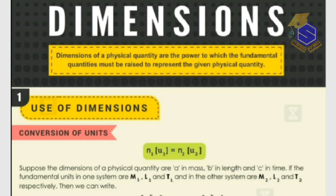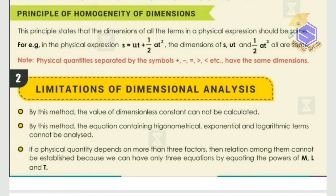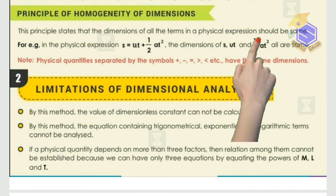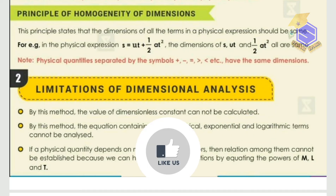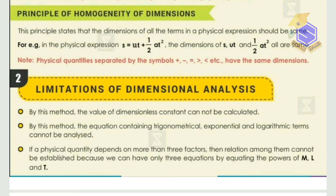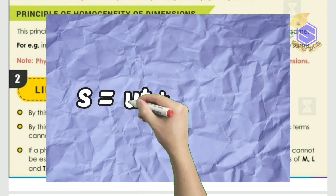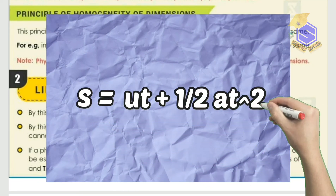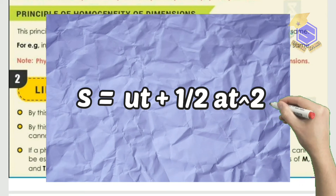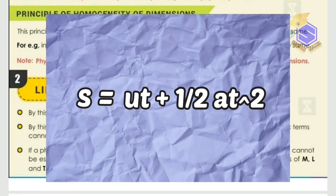Dimensional formula is an expression for a physical quantity in terms of fundamental physical quantities. We also have a principle called the principle of homogeneity of dimensions. According to this principle, the dimensions of all the terms in a physical expression should be the same. If we take an equation like s = ut + ½at², it contains several terms on the left-hand side and right-hand side — the dimension of each and every term should be the same.